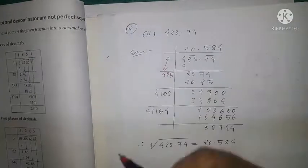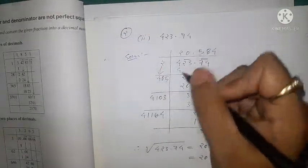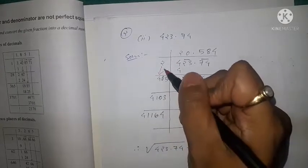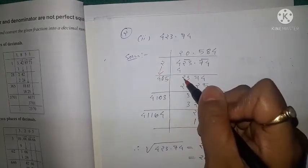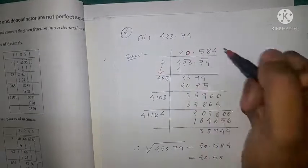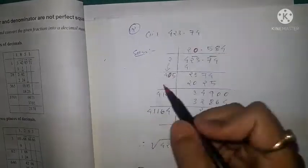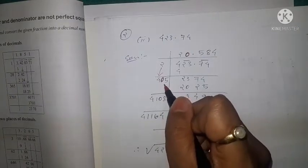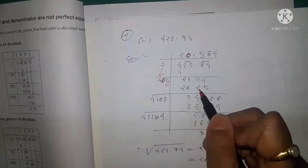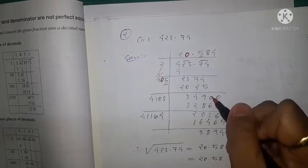This 2 is doubled to 4. Since 23 comes down and 40 is already bigger than 23, even taking 1 would give 41 which is bigger than 23, so we put a zero in the quotient and place the decimal. Then 74 comes down. Since we put 0 here, we also put 0 in the divisor, making it 40. So 405 × 5 = 2025, and the remainder is 349.